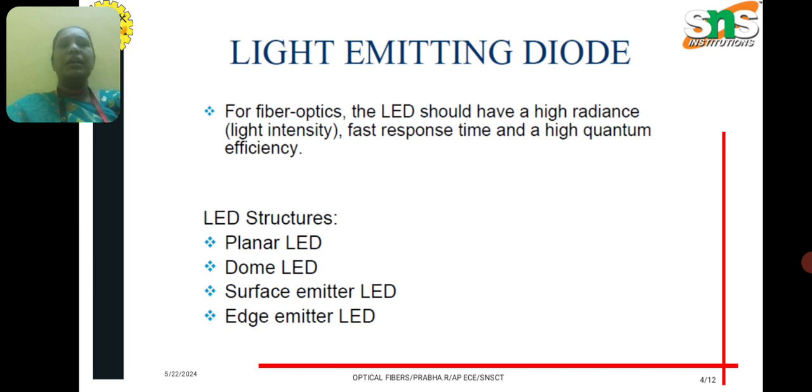The light emitting diode has many types. They are planar LED, dome LED, surface emitter LED, and edge emitter LED.